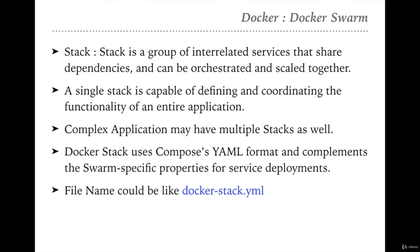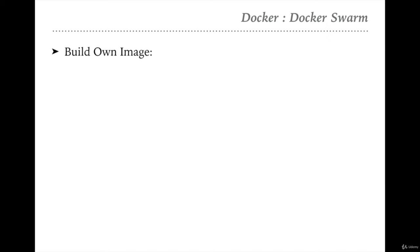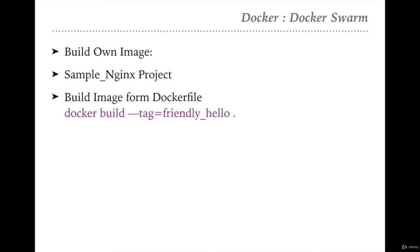We are going to develop an application from scratch, start it with the Docker Compose YAML file, and then with the Docker Stack YAML file. We are going to build our own images. The image will be called 'sample_nginx_project'. This image is a composition of four files: a requirements file, a Python program, a Dockerfile, and a YAML file.